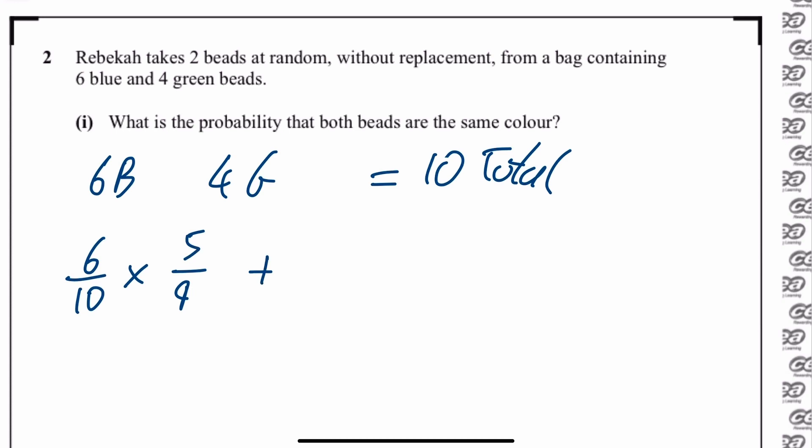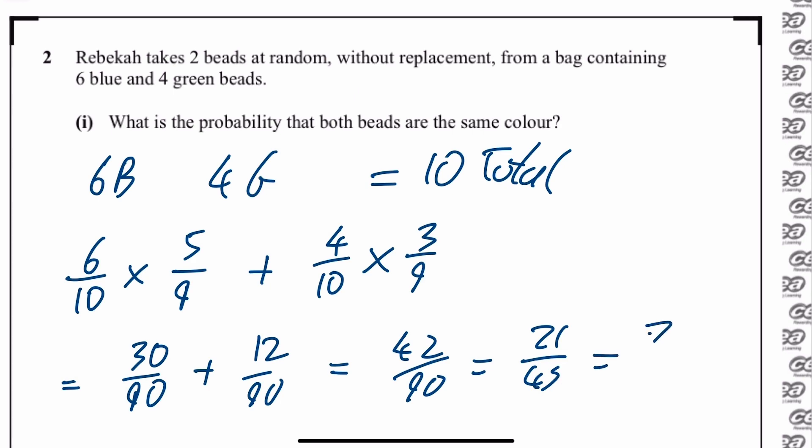Or, when you say or, you do an add, you could have green. So 4 out of 10 and another green, which is going to be 3 over 9. So you have 30 over 90 plus 12 over 90, which works out to be 42 over 90, which is then 21 over 45, which then works out to be top and bottom divided by 3 to give you 7 over 15.